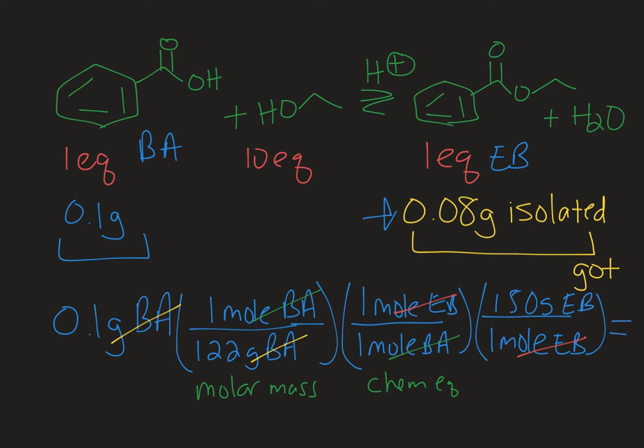So ultimately when we run the numbers that means that I would isolate a maximum of 0.12295 grams of ethyl benzoate. So that's my theoretical yield. Let's go to the next slide and we'll do our final percent yield calculation.